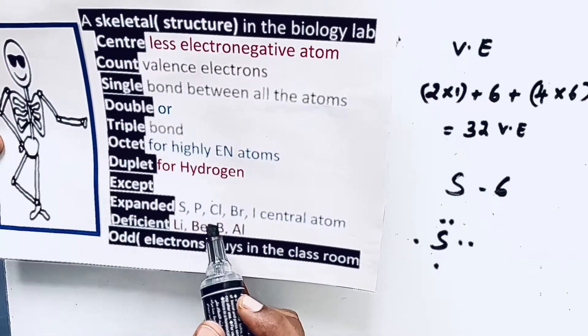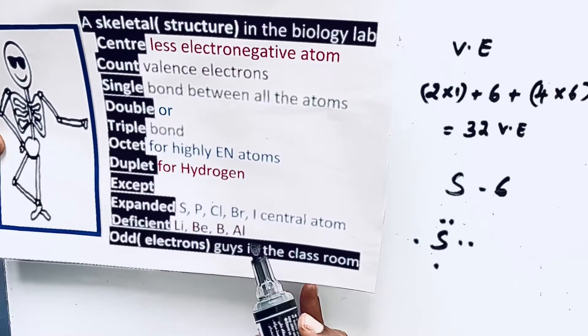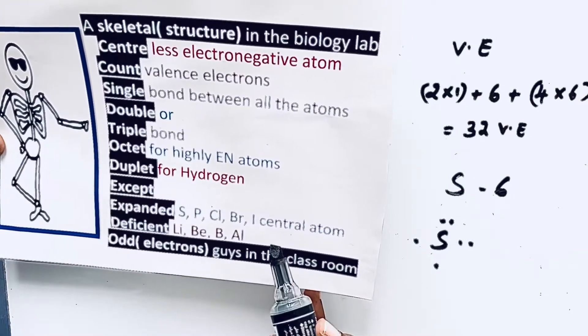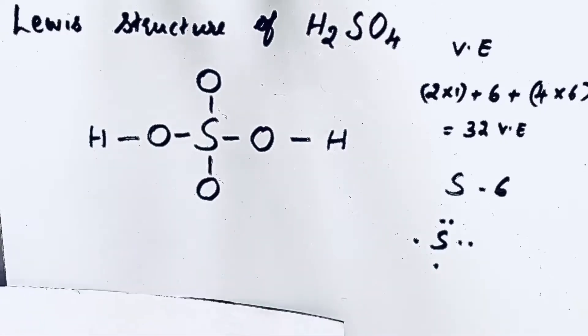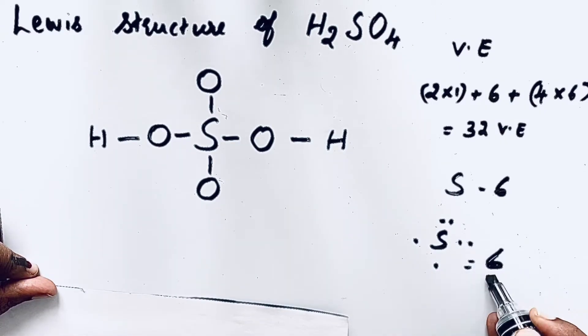Expanded means sulfur, phosphorus, chlorine, bromine, iodine as a central atom expanded. They can have more than eight. So they do not follow that octet configuration. So how many bonds can sulfur form? Six bonds are possible.